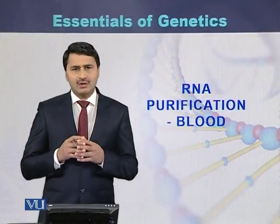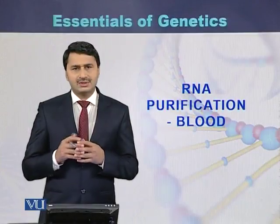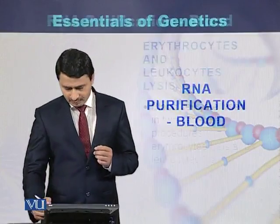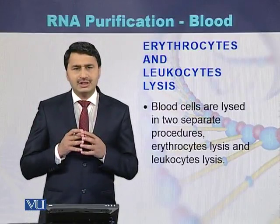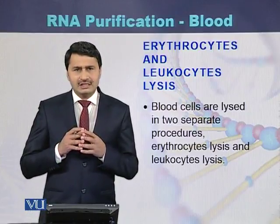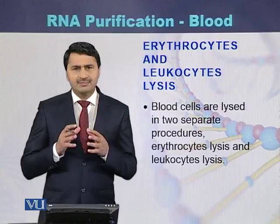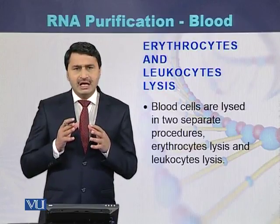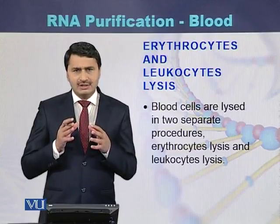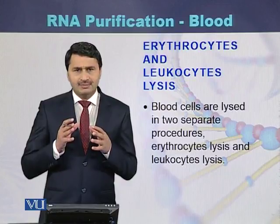RNA purification from blood samples. Blood consists of three major cell types: white blood cells, red blood cells, and platelets. Red blood cells are also called erythrocytes; white blood cells are also called leukocytes.